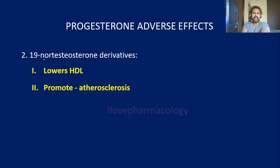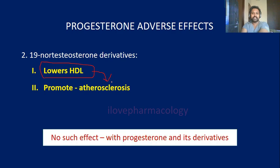The 19-nortestosterone derivatives lower HDL cholesterol and promote atherosclerosis. It is important to remember that these atherosclerosis-related side effects are not seen with progesterone and its natural derivatives — they are more commonly associated with the 19-nortestosterone derivatives.